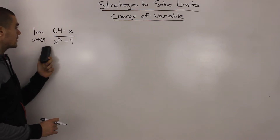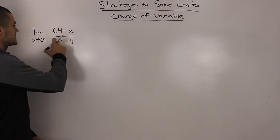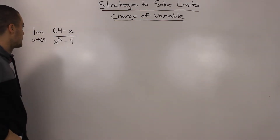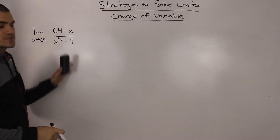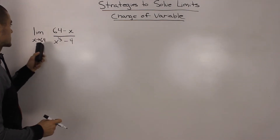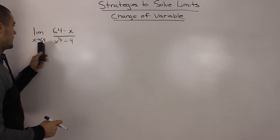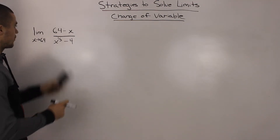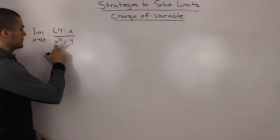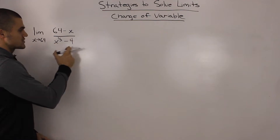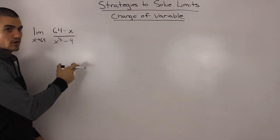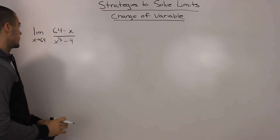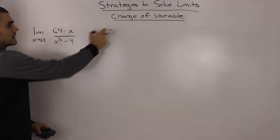We're going to start with an example: the limit as x approaches 64 of (64 minus x) over (x to the power of 1/3 minus 4). With limits, the first thing we always check is whether we can directly substitute the x value. If we substitute 64, we get a denominator of zero because 64 to the power of 1/3 is 4, and 4 minus 4 is zero — so we can't do that.